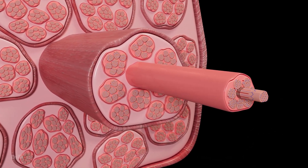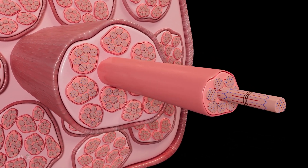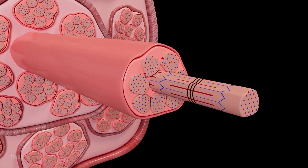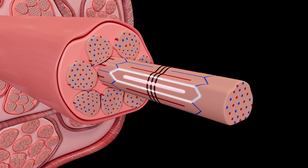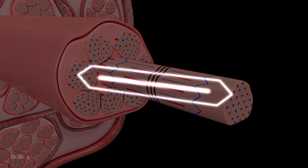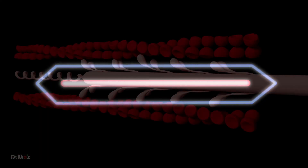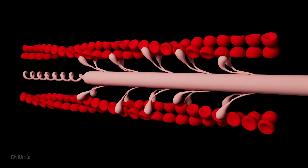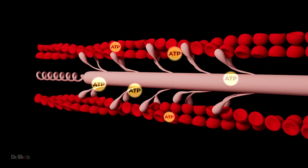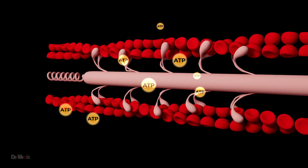These cells play a critical role in muscle repair and growth by fusing with existing muscle fibers and contributing to the synthesis of new muscle protein. Another important mechanism involved in muscle growth is protein synthesis.